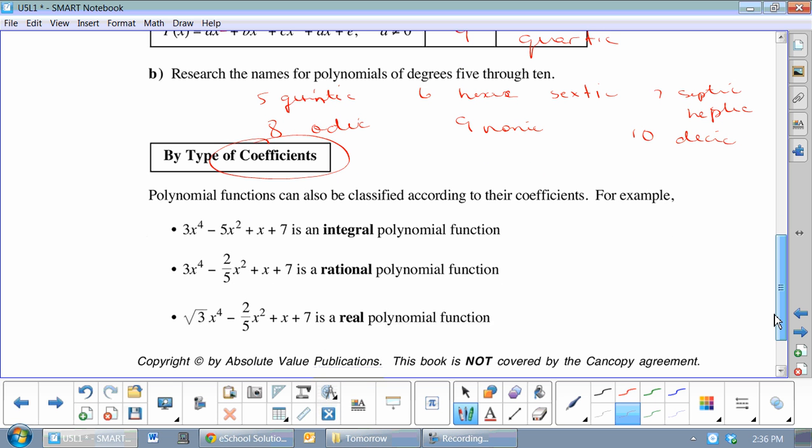They can be classified by their coefficients. So, if anywhere they have a rational number, it's a rational. Real or integral. So, here, these are all integers. Actually, I shouldn't be looking at the constant. Those are all integrals. So, this one is rational because it has one fraction. Doesn't matter where it is, as long as it's a coefficient. And then, root 3 would be a real, because it is neither rational nor integral. It is root 3, which is just a real number. So, you're just looking anywhere in there.